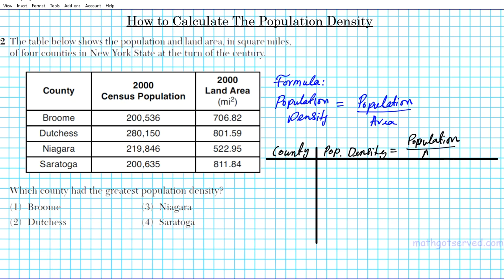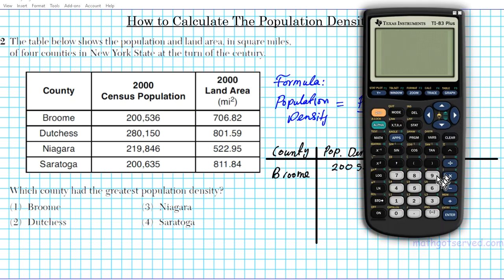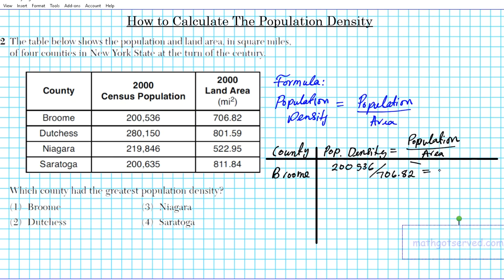Let's start with Rome County. The population is 200,536, and we divide that by the land area of 706.82 square miles. Using our calculator: 200,536 divided by 706.82 gives us a population density of 283.72.